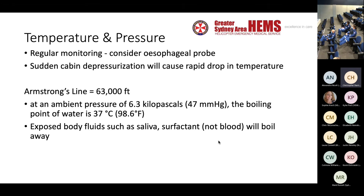This is actually how the crew of the Space Shuttle Columbia died. When they were exposed to the breach in the hull, they had their pressure suits on but they weren't closed — they didn't have their gloves on or their visors down. At that pressure, people would be impossible to oxygenate unless you can re-pressurize.